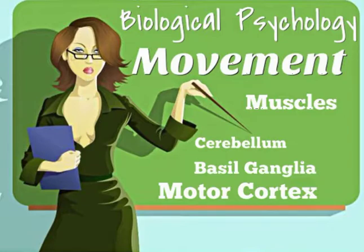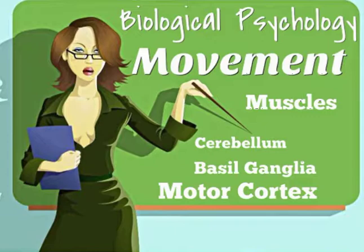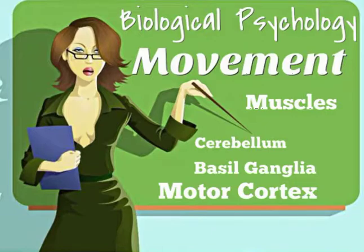Step one is the decision to move. Step two is the planning of the movement — this involves an area called the supplementary motor area and the pre-supplementary motor area. Step three: that plan is sent to your primary motor cortex. Step four: that activates your lateral pathway, which then activates your spinal motor neurons, which ultimately initiates muscle contraction. So: decision, planning, primary motor cortex receives the plan, lateral pathway and spinal motor neurons are activated, and muscles contract.